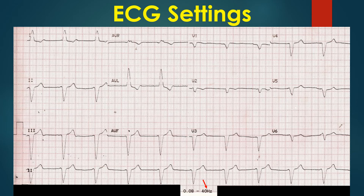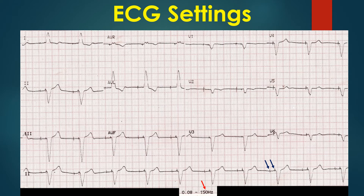A pacemaker spike, being a high-frequency signal, is effectively filtered out by filter settings of 0.08 to 40 Hz, causing the ECG to appear as left bundle branch block at first look — missing the P waves expected before each QRS in simple LBBB with sinus rhythm. When the same ECG is repeated with the low pass filter changed to 150 Hz, both atrial and ventricular pacing spikes become visible before each QRS complex, confirming a functioning dual chamber pacemaker. The paced P waves are either of low amplitude or represent atrial capture failure. This highlights the importance of appropriate ECG filter settings for each case, as non-optimal settings affect signal quality depending on component frequency.